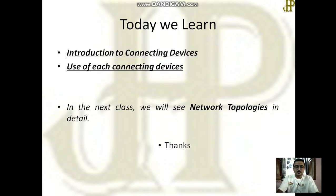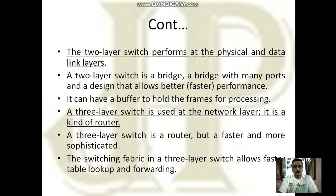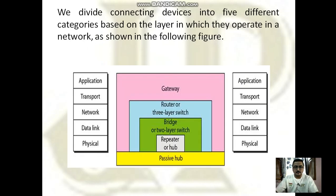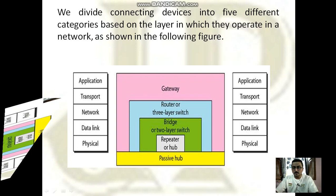That's all for today. Today we learned the introduction to connecting devices and the use of each. In summary: hubs send data from one end to all other connected devices; repeaters or active hubs amplify the signal; bridges or two-layer switches add error checking to find and filter faulty data; routers or three-layer switches decide the best path from one end to another; and gateways are used to connect two dissimilar networks.